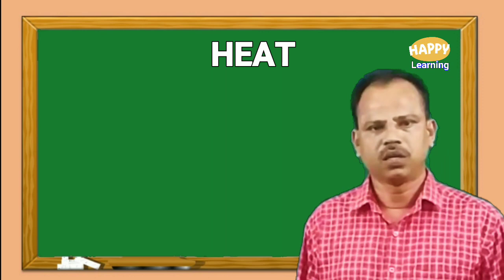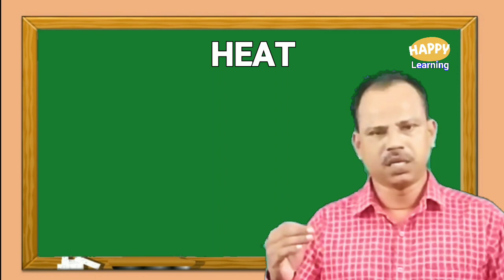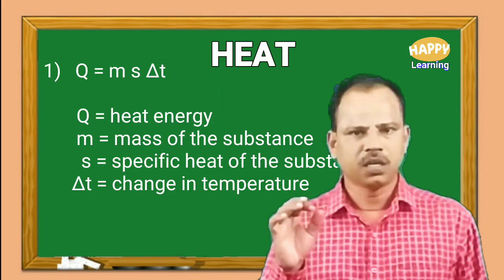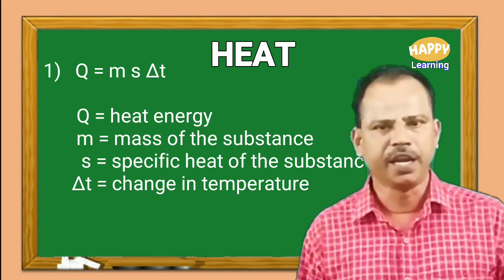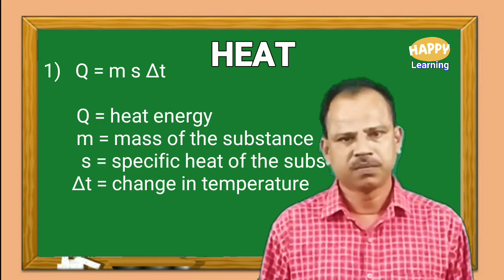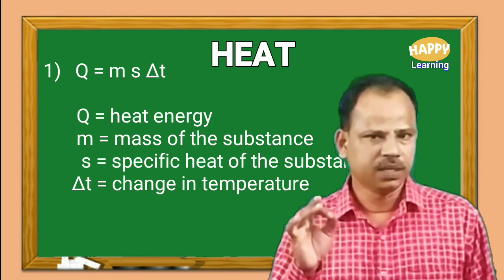Before that, let us recollect the two formulas we have learned. Number one is Q equal to M S delta T, where Q is the heat energy, M is the mass of the substance, S is the specific heat of the substance, and delta T is the change in temperature. This formula has to be used when there is no phase change — only a rise or fall of temperature.